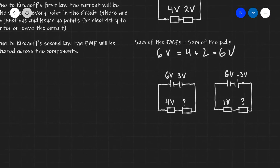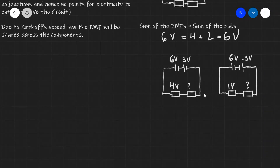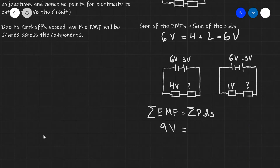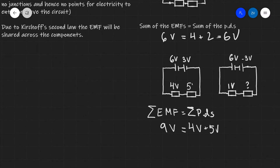Let's have a good look at those two circuits, starting with the first one over here. Kirchhoff's second law tells us that the sum of the EMFs is going to equal the sum of the PDs. The sum of the EMFs in this case is going to be 6 volts plus 3 volts, so that's 9 volts in total. Those are going to equal the sum of the PDs, so it's going to be 4 volts plus something else — and we can see that something else is going to be 5 volts. So the first PD will be equal to 5 volts.